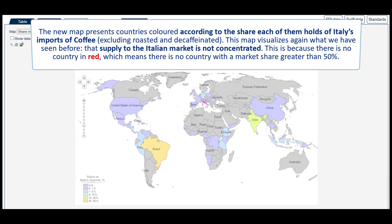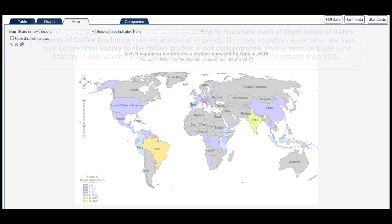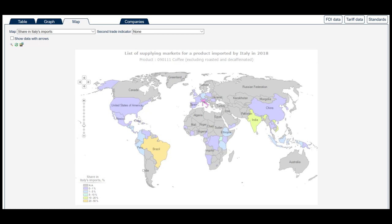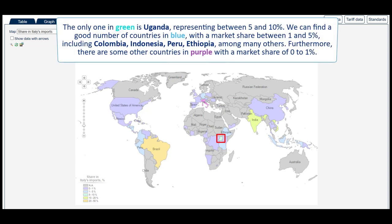This map visualises what we have seen before: that supply to the Italian market is not concentrated. This is because there is no country in red, which means there is no country with a market share greater than 50%. Brazil is the only country coloured orange, representing between 20 and 50% of market share. Then we have Vietnam and India coloured yellow, representing between 10 and 20% of market share. The only one in green is Uganda, representing between 5 and 10%. We can find a good number of countries in blue with a market share between 1 and 5%, including Colombia, Indonesia, Peru, Ethiopia, among many others.